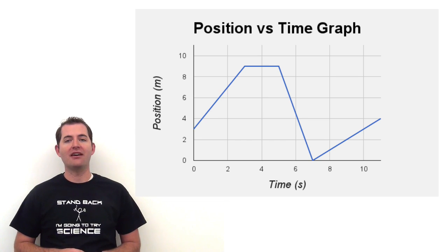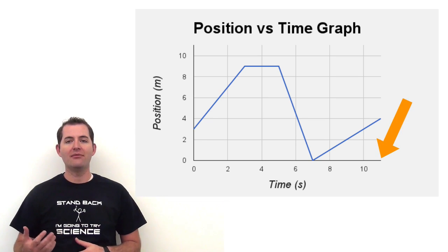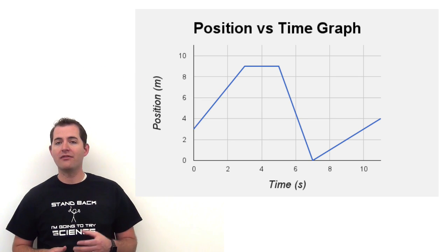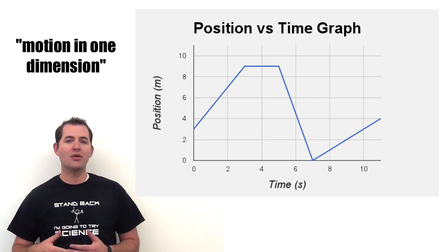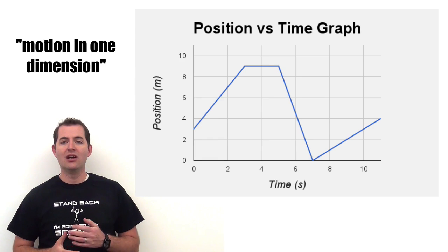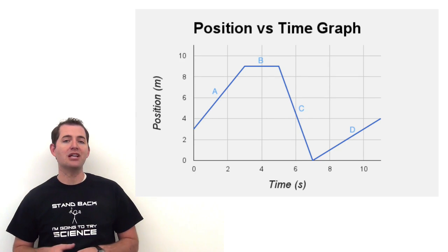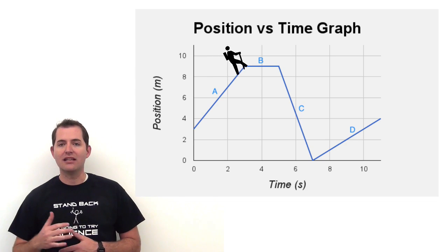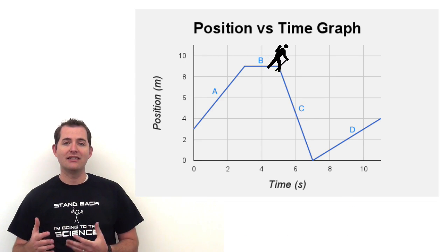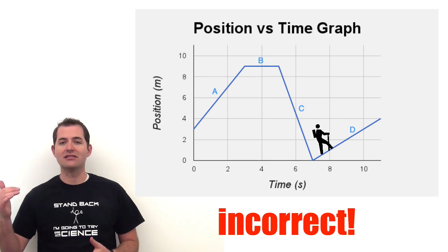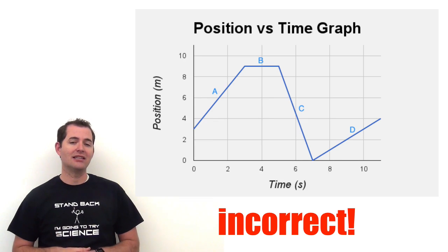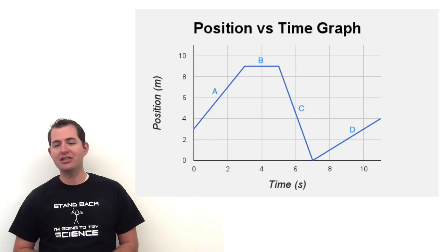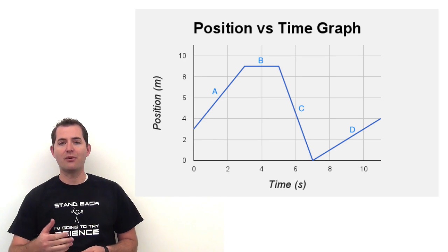On this position versus time graph the entire motion takes 11 seconds, and we have the positions on the left-hand side. One of the first things we need to realize is that it is motion in one dimension — we're going in one direction throughout all of this motion. A common misconception is that in section A we're walking up a hill, section B we're across the top, section C we're coming down, and section D we're walking up another hill. This is not the case. We are in one dimension, meaning we don't have any hills — it's just one direction, forward and backwards.